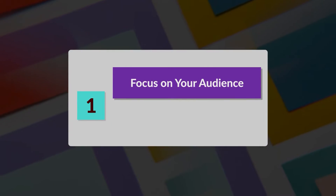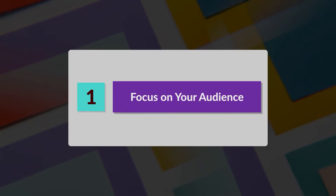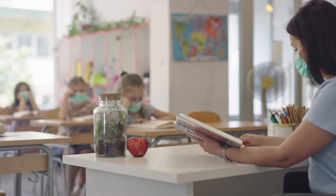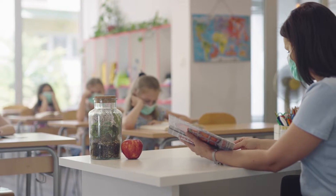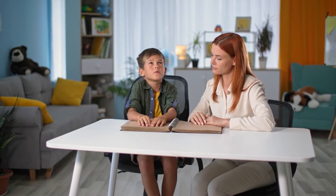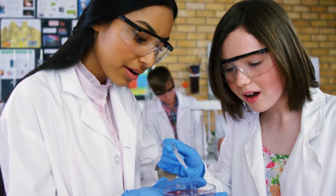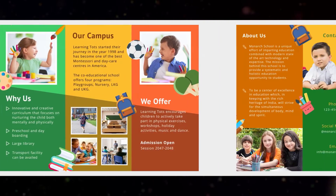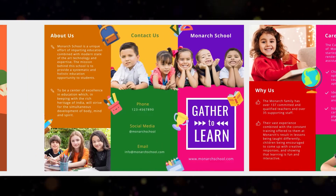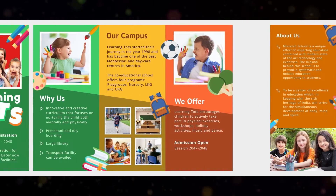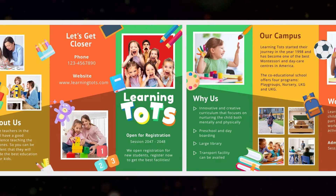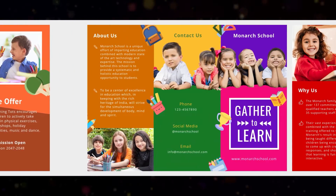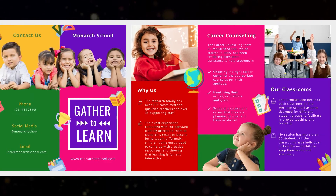Number 1: Focus on your audience. This rule is universal, especially for school brochures where you are trying to attract students of different age groups. If you look at these templates, they are built for preschoolers. You can see bright colors and fun graphics that make it appealing to the little ones.